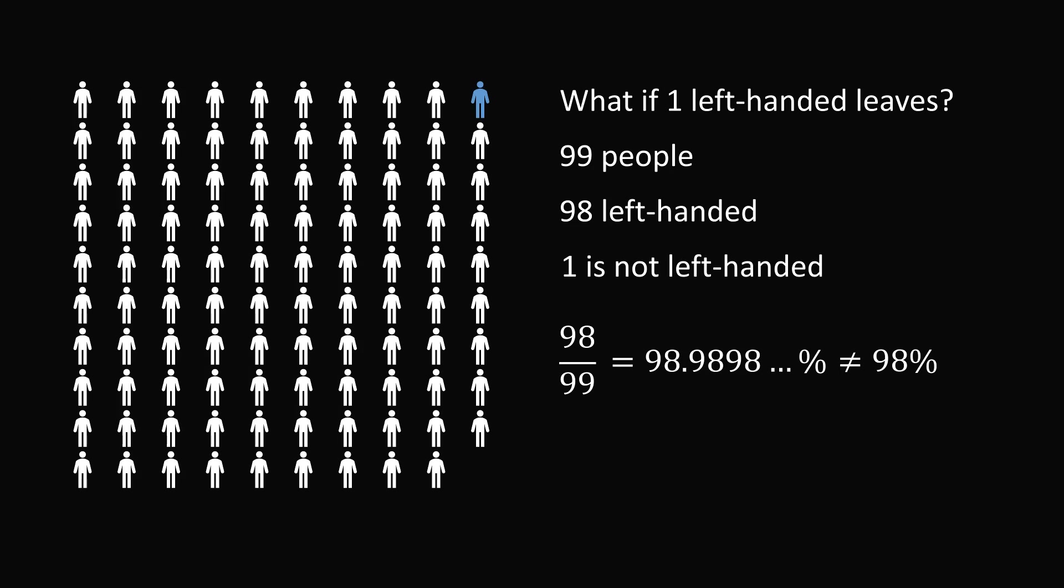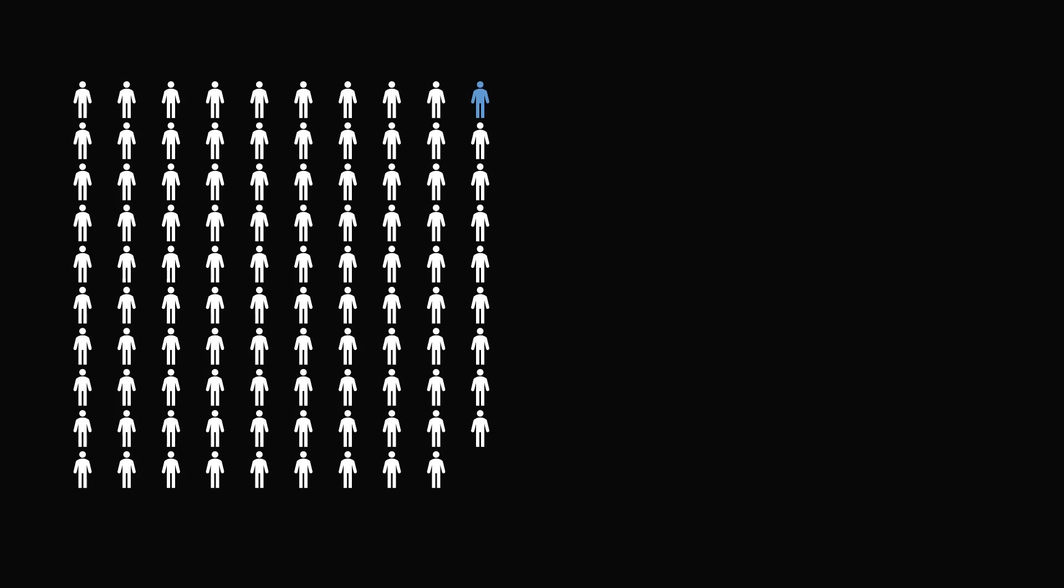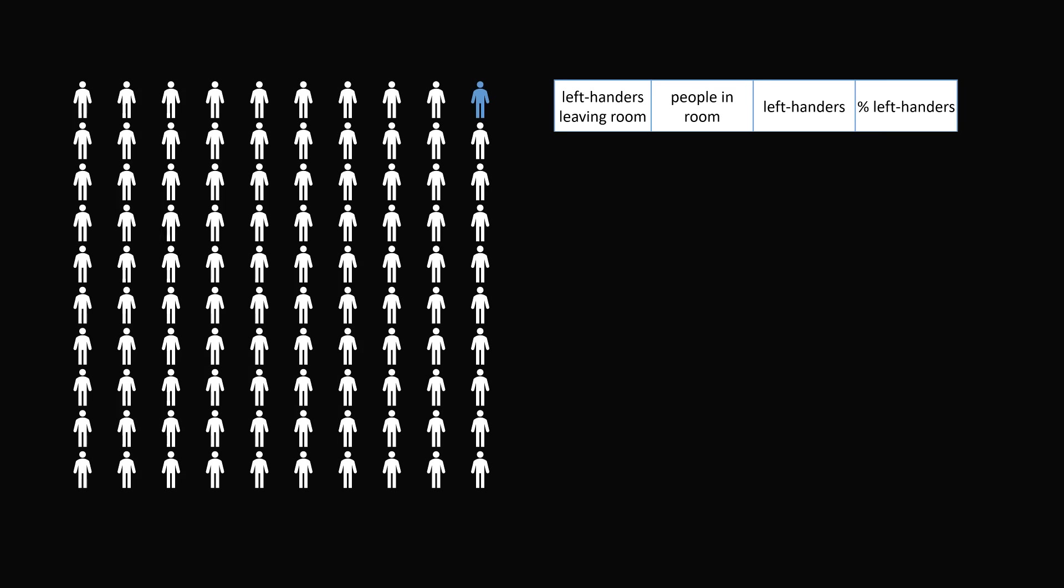So how many people actually do have to leave the room? We can set up a table to do a calculation. Let's say that we have the number of left-handers that are leaving the room. Then we have a column for the people that are in the room. We will count the number of left-handers and then the percentage of the room that is left-handers. So let's set up a variable x to be the number of people who are left-handed who are leaving the room. The number of people in the room will be 100 minus x. The number of left-handers will be 99 minus x.